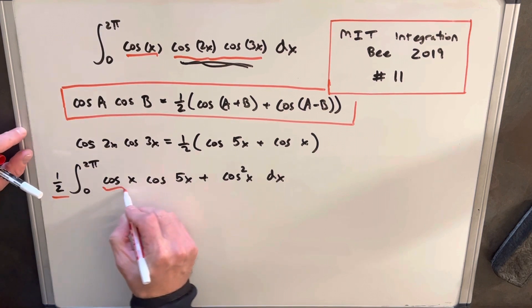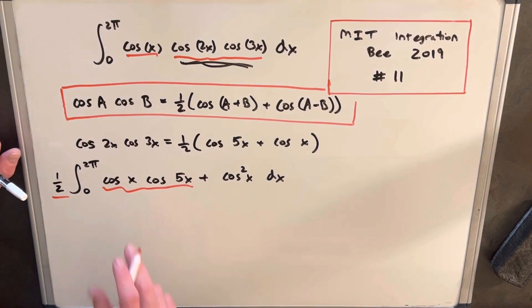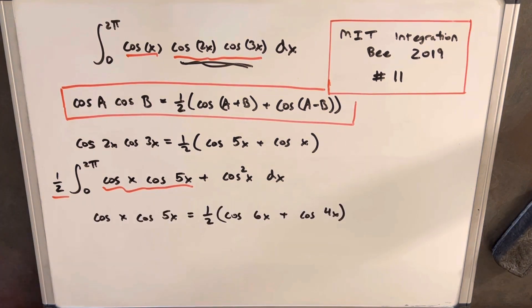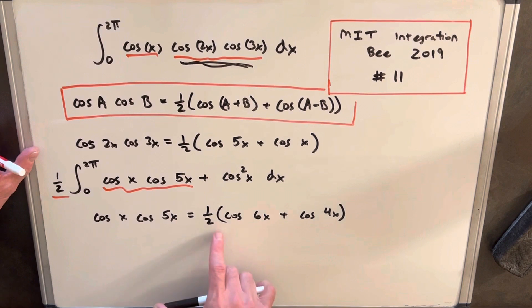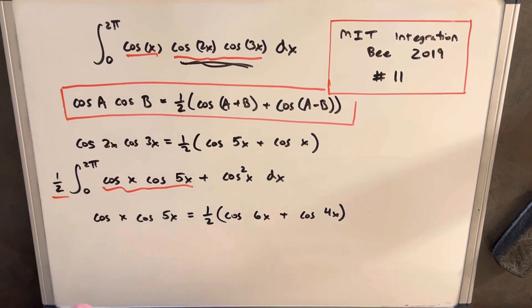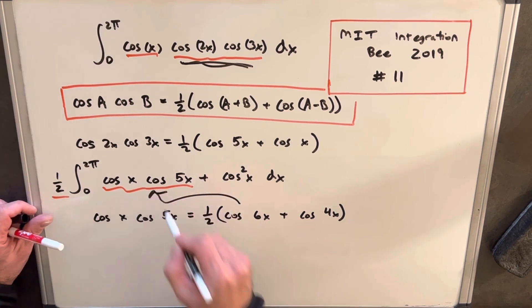But then notice we have the same problem here. We have different angles again. So we can just apply this formula again on cos x, cos 5x. So then notice cos x times cos 5x is a half, the sum of the angles, which is cos 6x, and the difference of angles, which is cos 4x. So now we can take this piece and plug it right back into our integral again here.